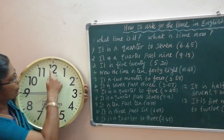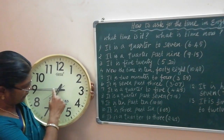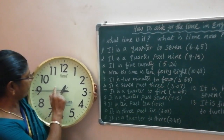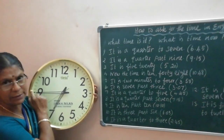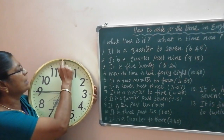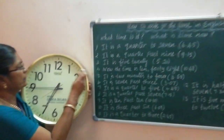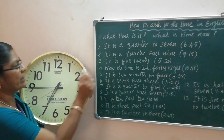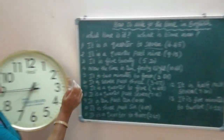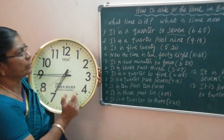From 12 to 3 is called a quarter. From 3 to 6 is called a quarter. From 6 to 9 is called a quarter. From 9 to 12 is called a quarter. So, it is quarter to seven — that means the time is 6:45.